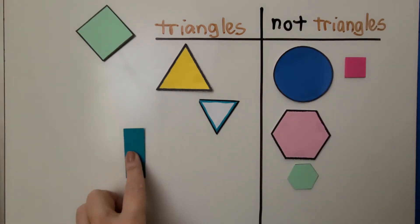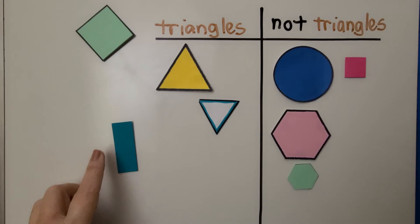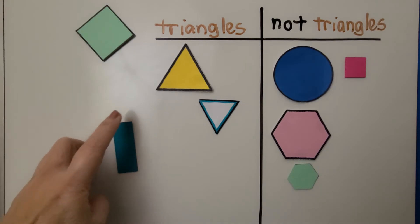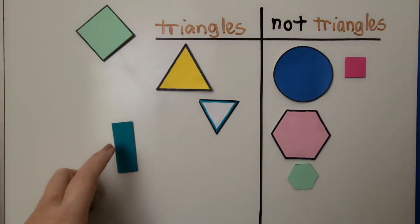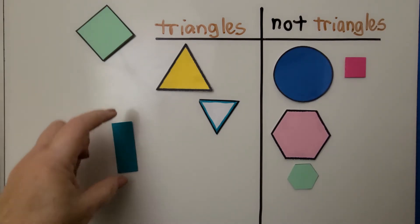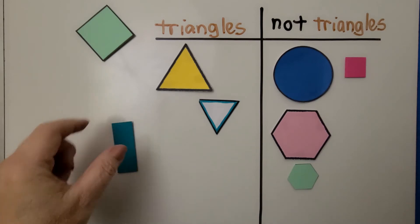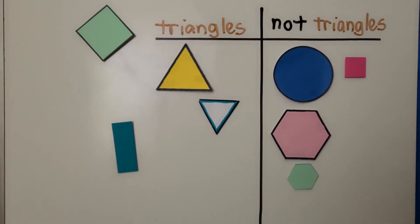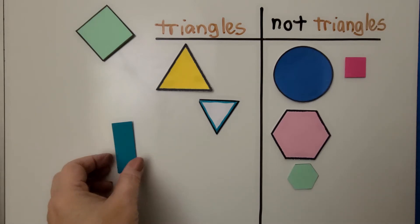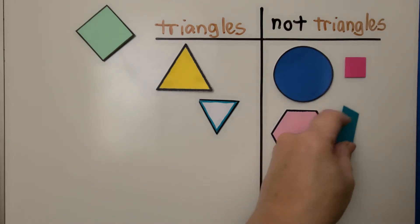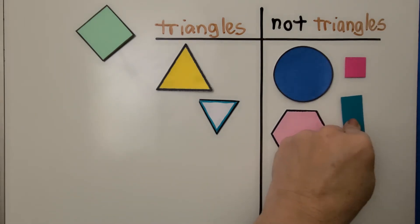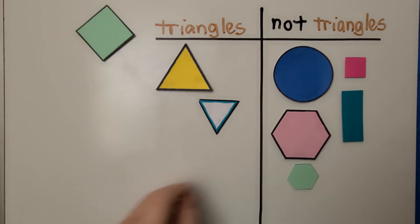Is this a triangle? It has one, two, three, four sides. Two sides are short. Two sides are long. If you said no because it's a rectangle, you're right. It should go over with not triangles.